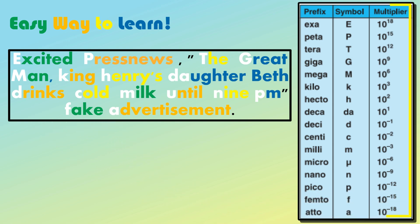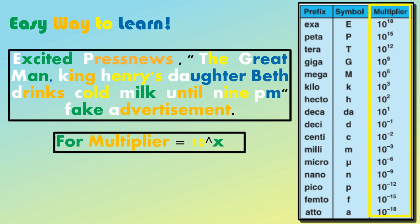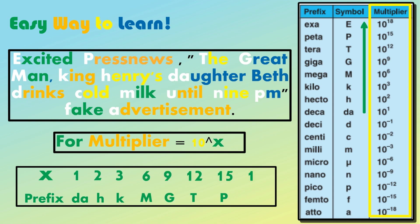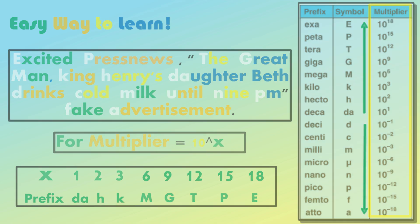For the multiplier, each is raised to some power of 10. Starting from deca: 1, 2, 3, then multiples of 3 — that is 6, 9, 12, 15, 18. And the same order while moving from deci onwards.